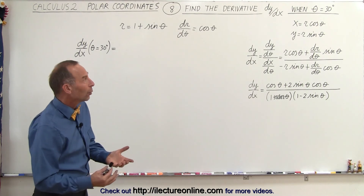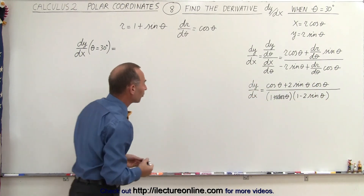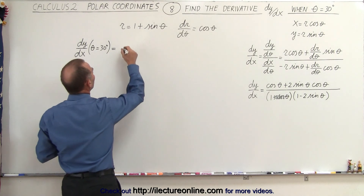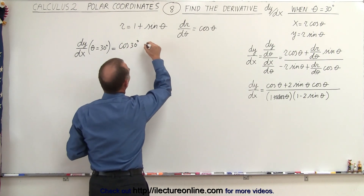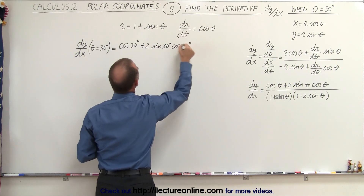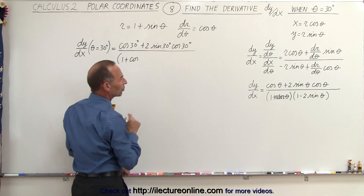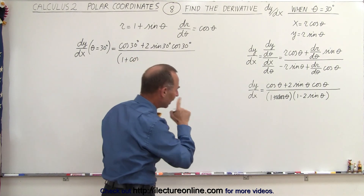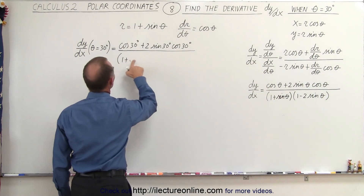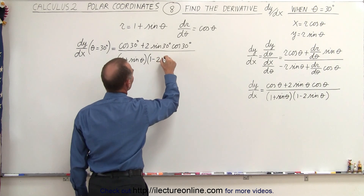Now, how do we evaluate that when the angle is 30 degrees? All we have to do is replace every angle with 30 degrees and solve for dy/dx. So let's write cosine of 30 degrees plus 2 times the sine of 30 degrees times the cosine of 30 degrees, divided by the quantity 1 plus... wait, something is wrong here. That should be the sine, not the cosine. So this should be the sine of theta, and therefore this here will be the sine of theta times 1 minus 2 times the sine of theta.